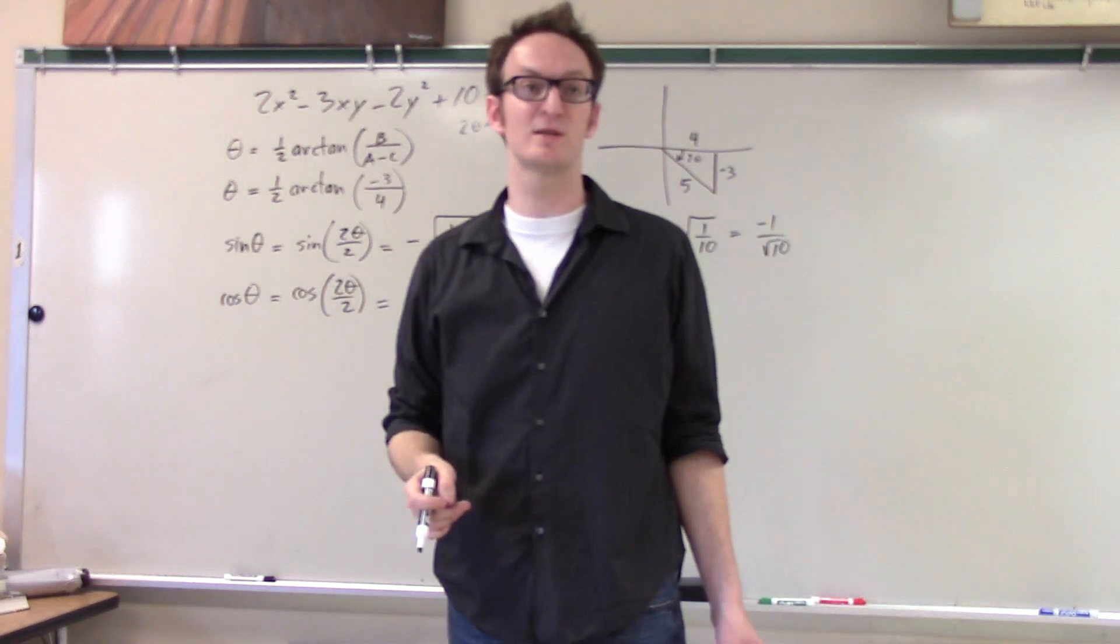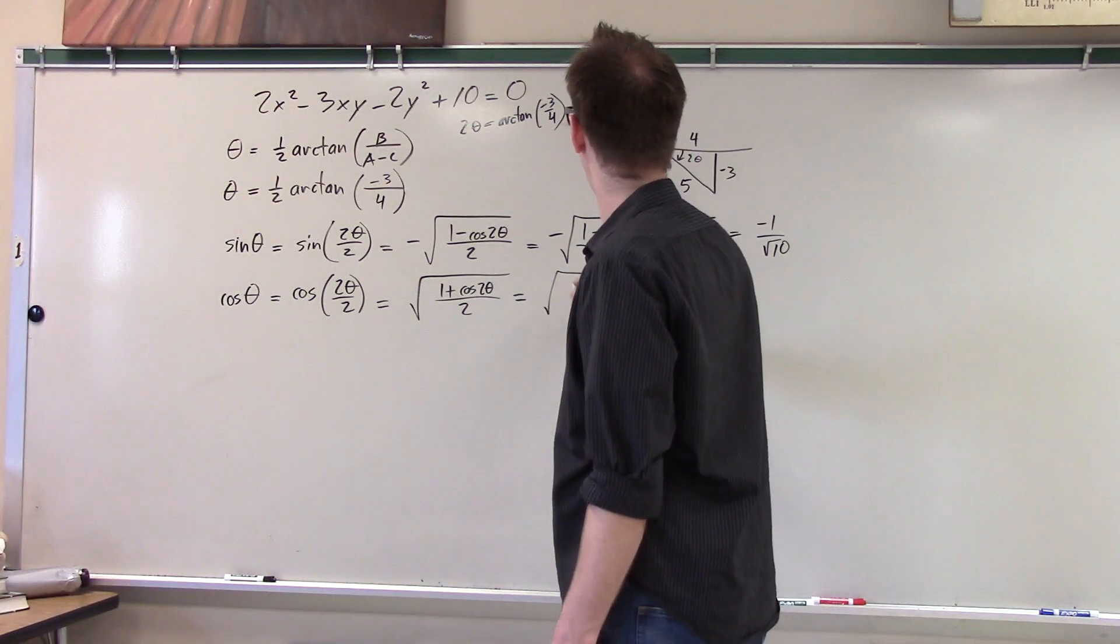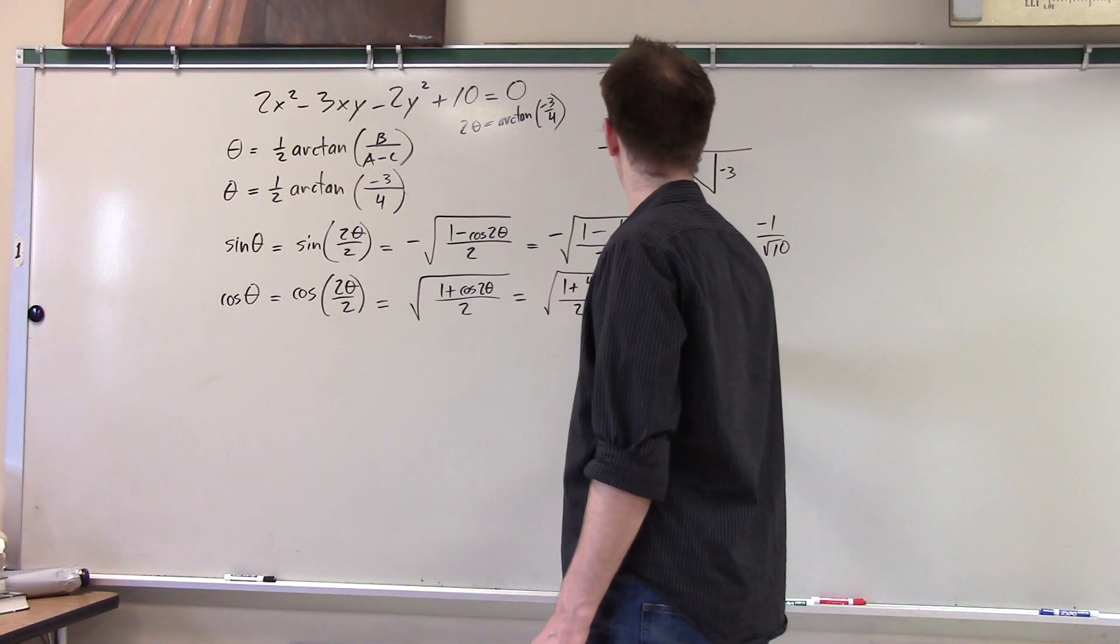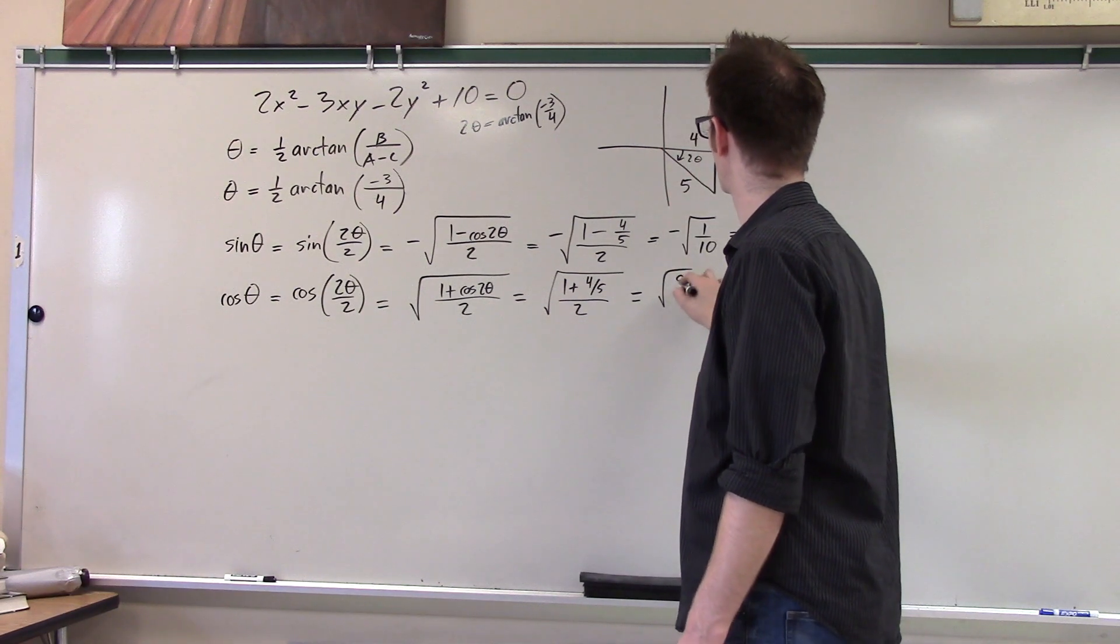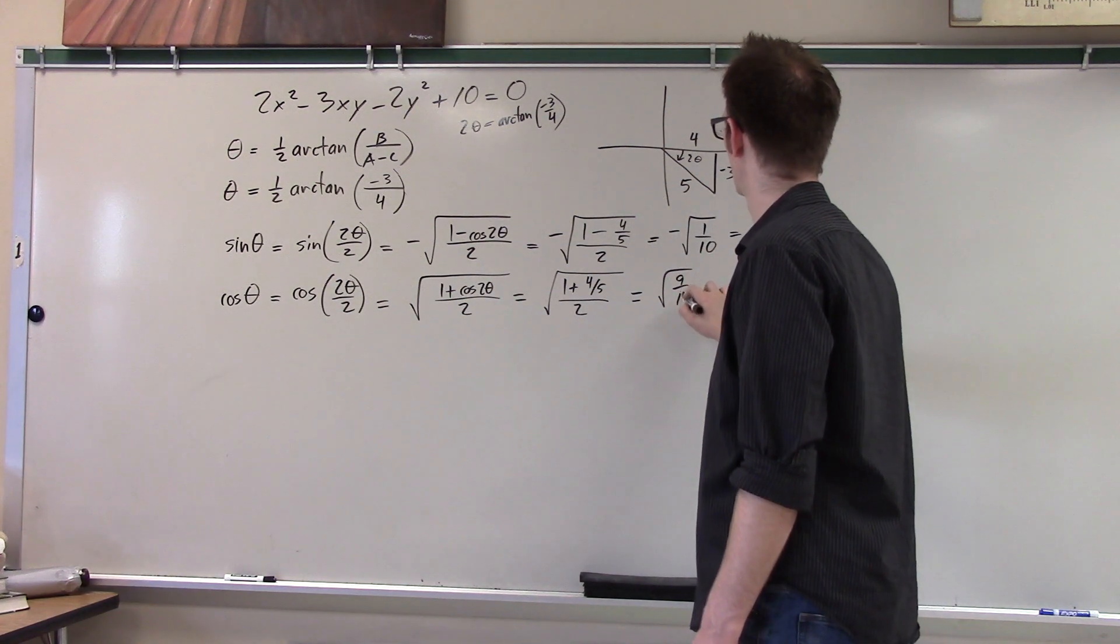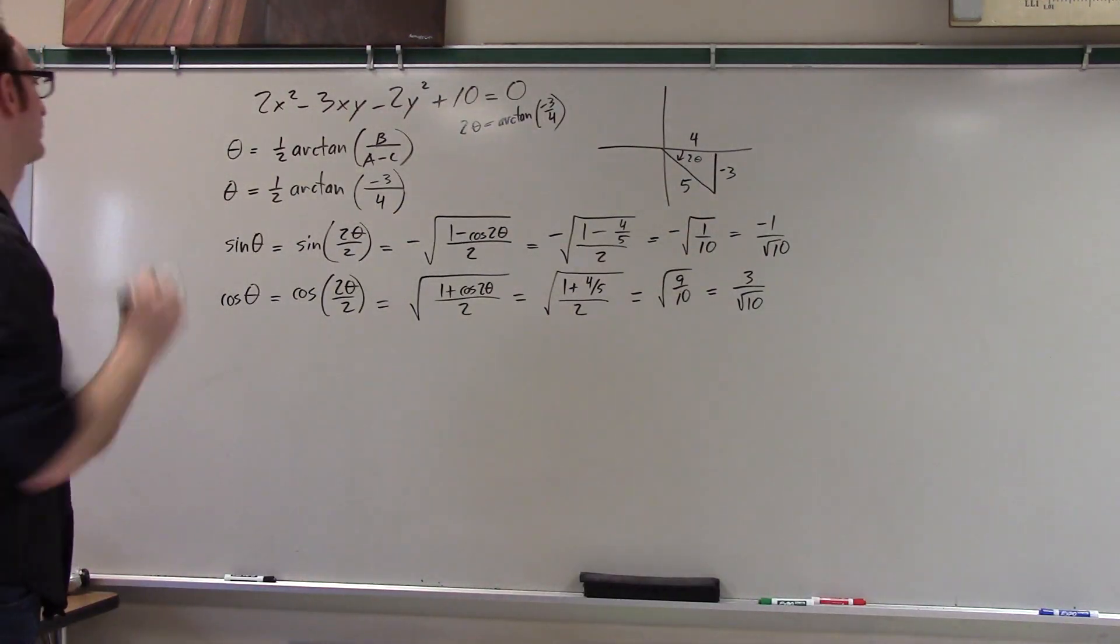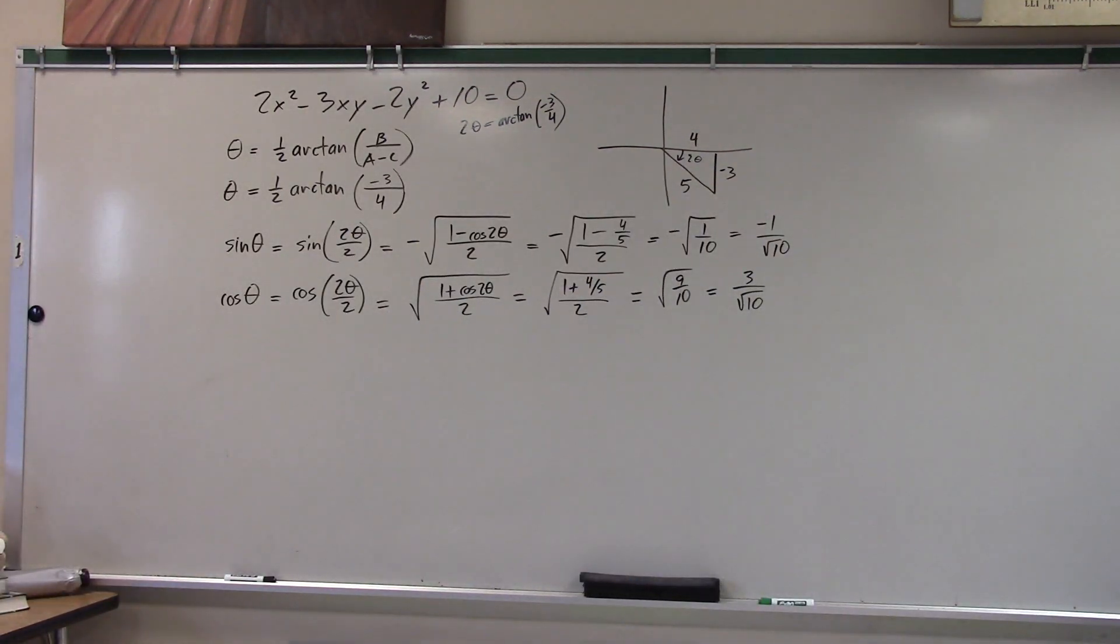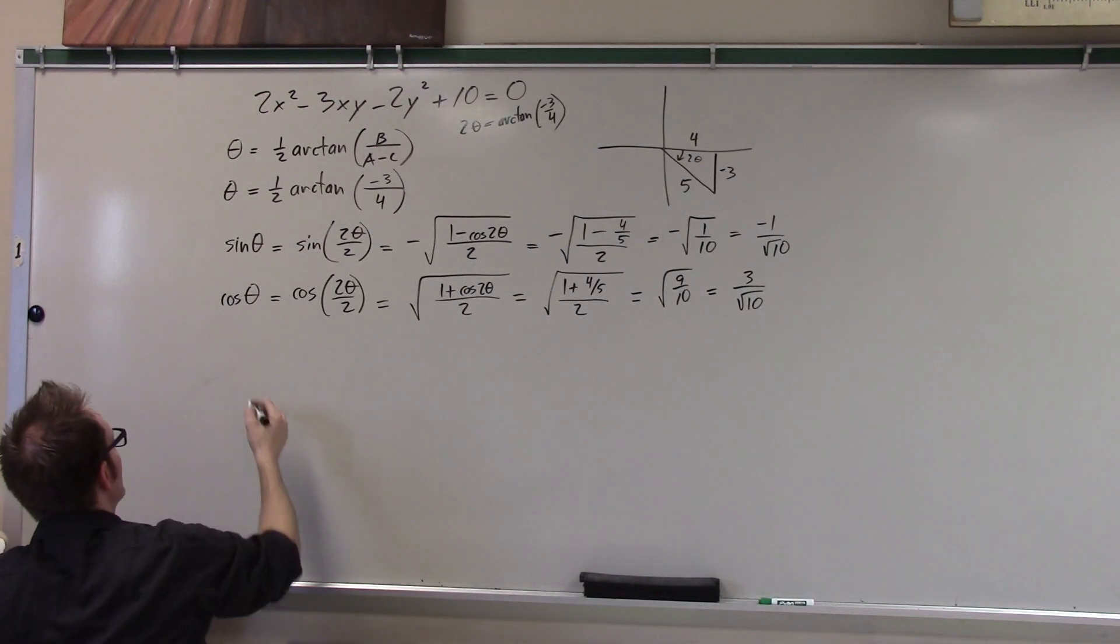And then what is cosine theta cosine theta is well now I use the so I just think of this as cosine of two theta over two so it's going to be half of this negative fourth quadrant angle is going to be still in the fourth quadrant so cosine of it will be positive so I choose the positive one now and it's one plus cosine two theta.